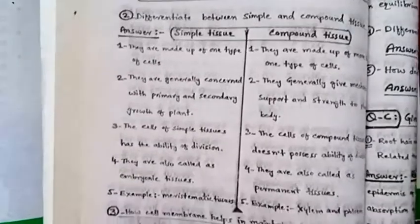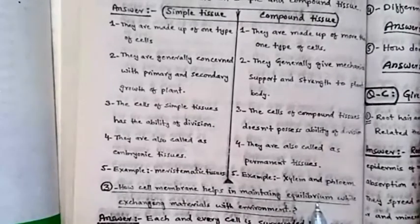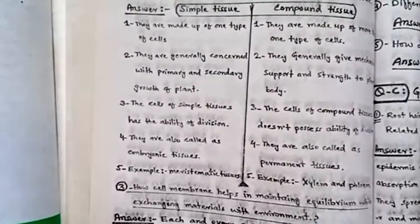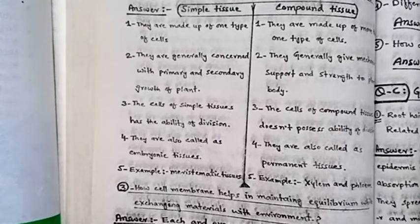Example of simple tissues: parenchyma, collenchyma, and sclerenchyma. Example of compound tissue: xylem and phloem. Next, question number 3: How does cell membrane help in maintaining equilibrium while exchanging material with the environment?